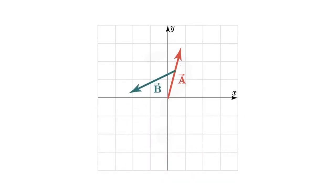We slide the tail of b to the head of a, and their sum is a vector drawn from the tail of a to the head of b.